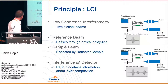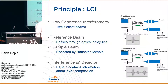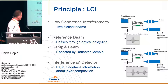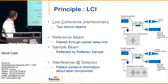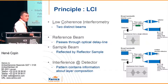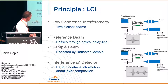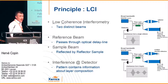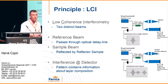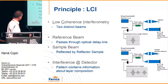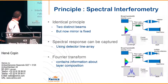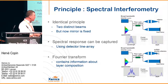What is low-coherence interferometry? There are two techniques: one based on time domain and another based on spectral measurements. The idea is simple — it is an interferometer with a broadband source such as a super-bright LED. You go through a beam splitter and the beam is split in two: one path to a reference reflector and the other to the sample. Recombining the signal creates an interference image that gives information about the surface of the object. If the sample has multiple layers, you get an image of all those layers.